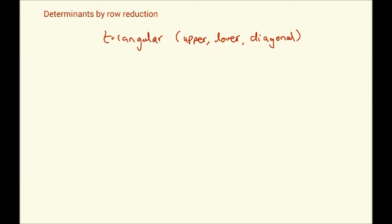So, any of these three matrices, if you have any of these matrices, then the determinant of a triangular matrix, upper, lower or diagonal is simply the product of the diagonal entries.